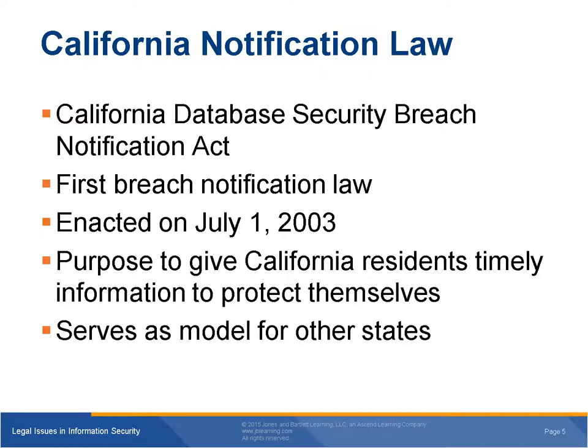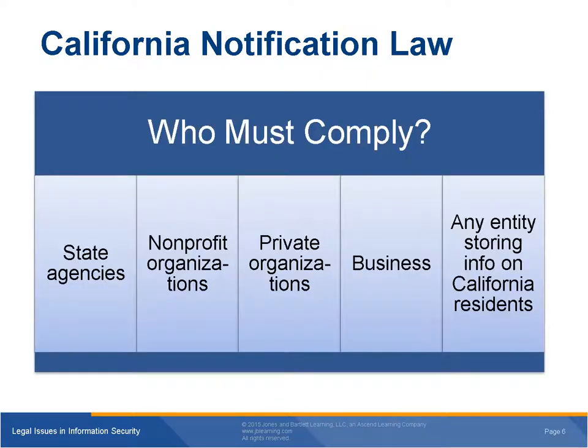The law requires entities to notify California residents whenever a security breach occurs. They must also notify residents if they reasonably believe that a breach has occurred. Those who must comply with the California notification law include state agencies, nonprofit organizations, private organizations, businesses, and any entity storing information on a California resident.